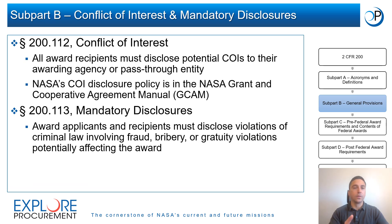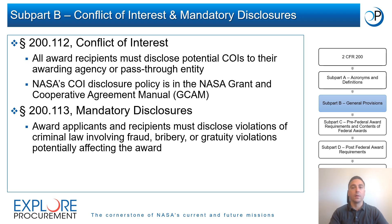Subpart B includes two important requirements for award recipients. Section 200.112 requires all award recipients to disclose potential conflicts of interest, or COI, to their awarding agency or pass-through entity in accordance with the awarding agency's policy — NASA's COI disclosure policy can be found in the NASA Grant and Cooperative Agreement Manual, or GCAM. Section 200.113 requires award applicants and recipients to disclose violations of criminal law involving fraud, bribery, or gratuity violations potentially affecting the award to their award-issuing agency.